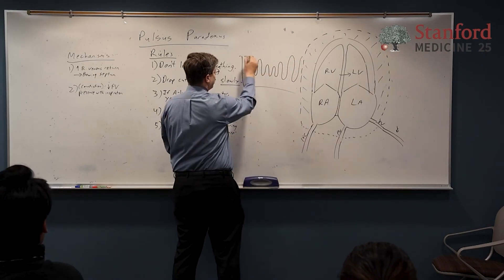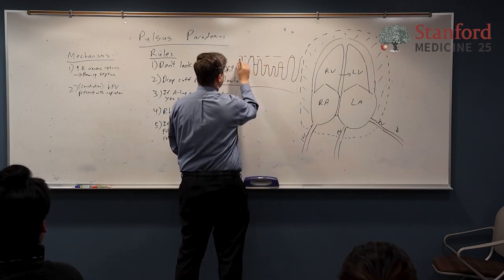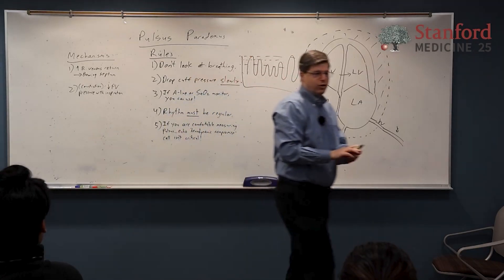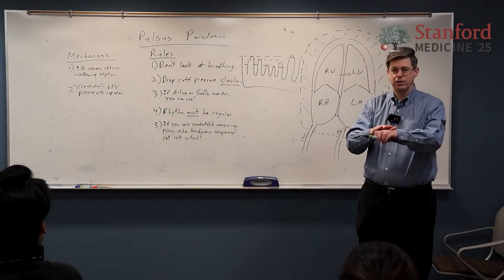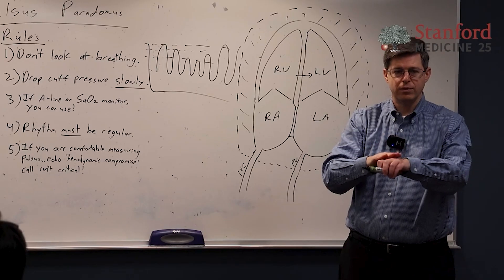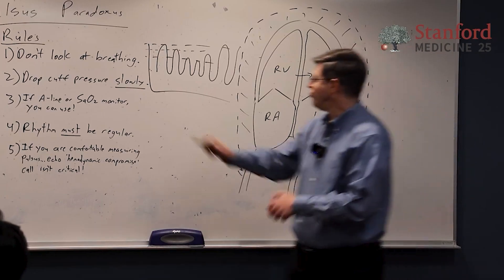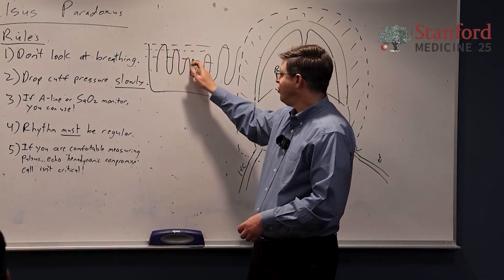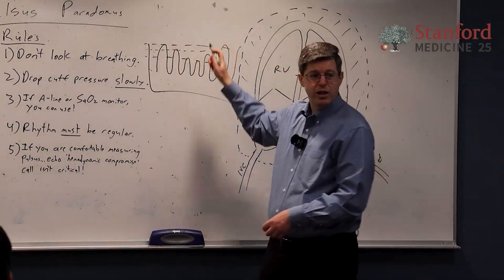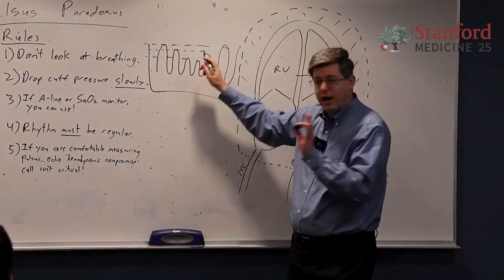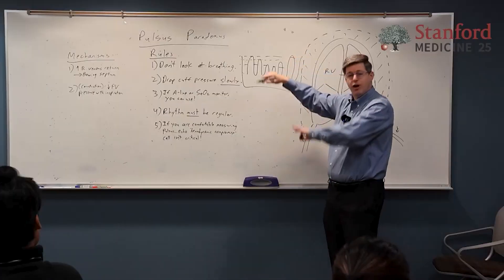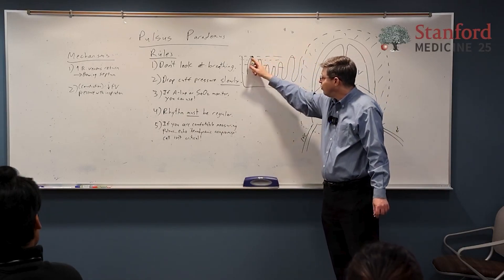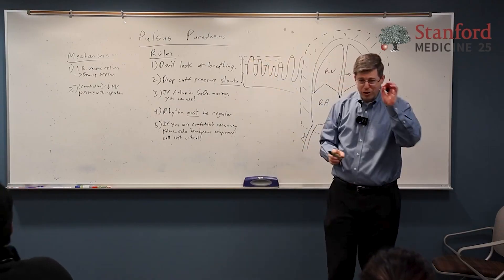We're again talking about the difference between here and here. So what if you are kind of right around there on your cuff? Well you're going to hear sounds - the sound is going to be loud here, maybe barely audible there, and then it's going to disappear until you get back above that. So how to do it? You get above the pressure, you start going down on the cuff until you get right here, and that is the first number.